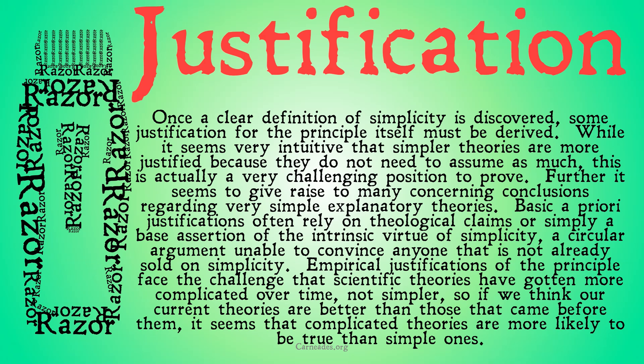Once a clear definition of simplicity is discovered, some justification for the principle itself must be derived. While it seems very intuitive that simpler theories are more justified because they do not need to assume as much, this is actually very challenging to prove. Basic a priori justifications often rely on theological claims or simply a base assertion of the intrinsic virtue of simplicity, which is a circular argument unable to convince anyone that's not already sold on simplicity. Empirical justifications of the principle face the challenge that scientific theories have gotten much more complicated over time, not simpler. So if we think our current theories are better than those that came before them, it seems that complicated theories are more likely to be true than simple ones. And so both empirically and intrinsically, there doesn't seem to be a strong justification for any kind of connection between simplicity and truth.